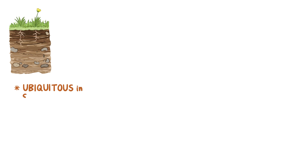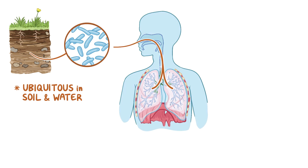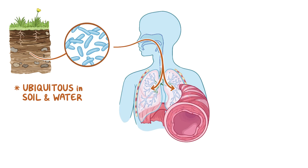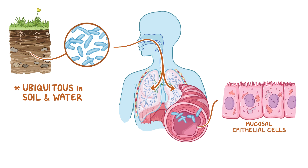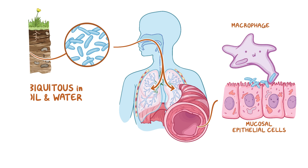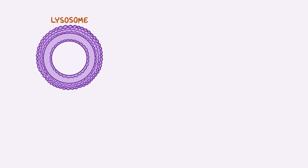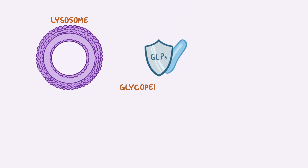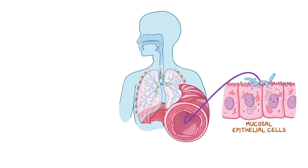MAC are ubiquitous in soil and water, and they're thought to enter the body through inhalation. Once inside the body, they adhere to mucosal epithelial cells in the respiratory tract and infect the macrophages that try to destroy them. Macrophages try to break down the MAC organisms inside an intracellular organelle called a lysosome, which contains digestive enzymes. However, MAC has unique antigenic lipids called glycopeptolipids, or GLPs, which are found on the surface of the cell. These GLPs act as a protective barrier against lysosomal enzymes, allowing the bacteria to survive and multiply inside macrophages.